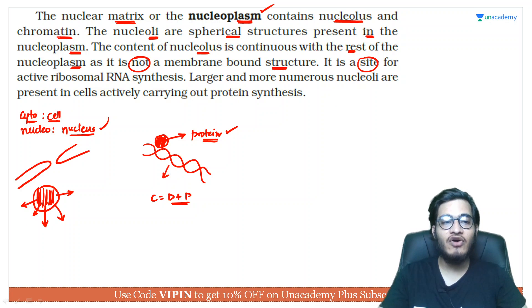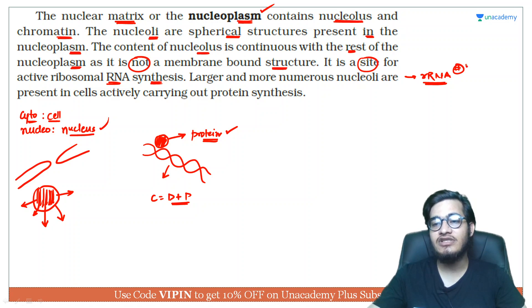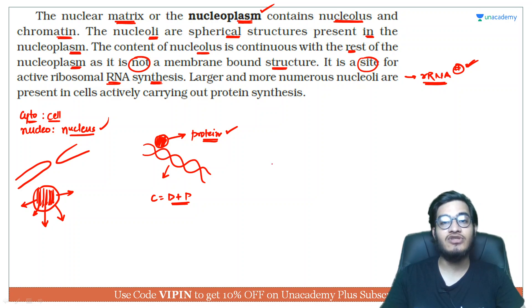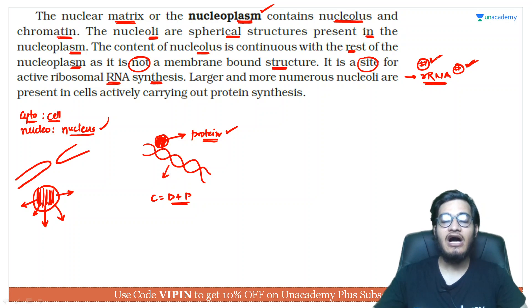The nucleolus is the site for active ribosomal rRNA synthesis. As I had already told you, rRNA is synthesized in the nucleolus — this is a question that has been asked in NEET exams, both in statement form and directly. This is why the nucleolus plays a key role in rRNA synthesis.